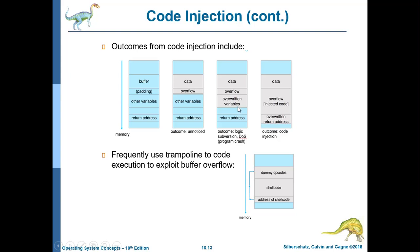The outcomes of code injection include overwritten variables, injected code, and overwritten return addresses — that is what malware does, modifying files until they become corrupted through the buffer overflow condition.